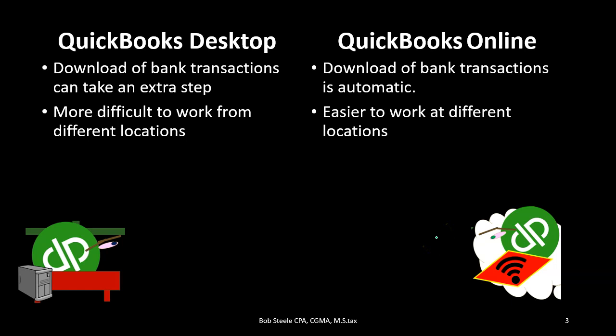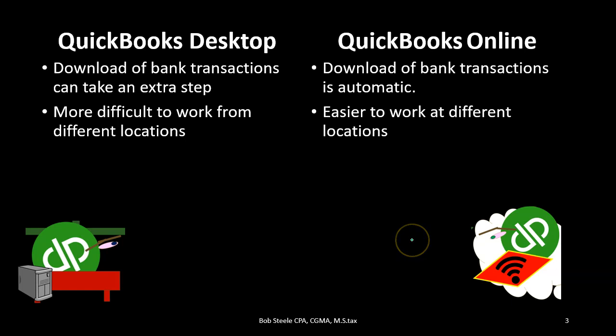If you're going to share data with someone like your accountant and have them log in, that's easier with the online version. With the desktop version, you'd typically make a backup file and provide it to the accountant, who would need QuickBooks to open it — most CPA firms have QuickBooks. With the online version, you can give the accountant direct access to the file. One disadvantage is that giving multiple people access means they can manipulate the live data, whereas a backup file limits them to just that copy.